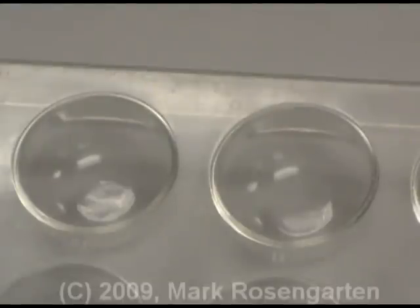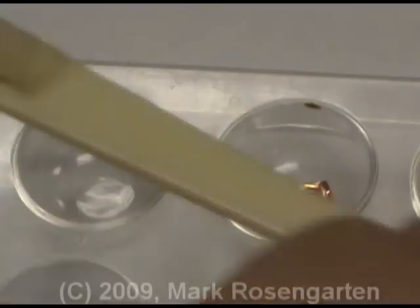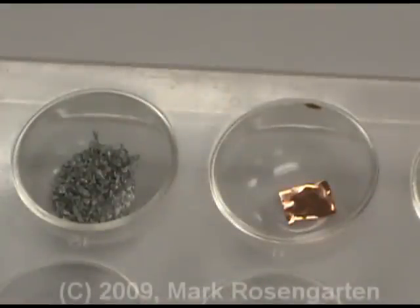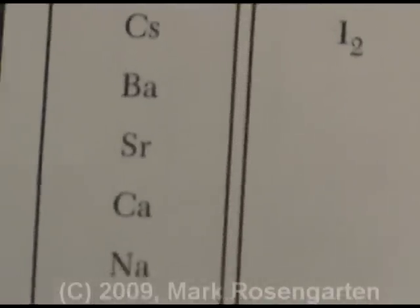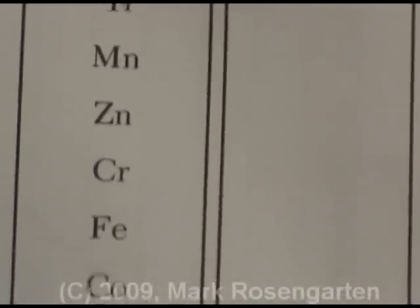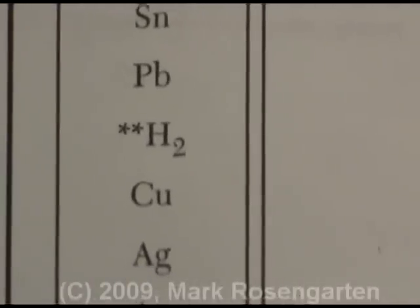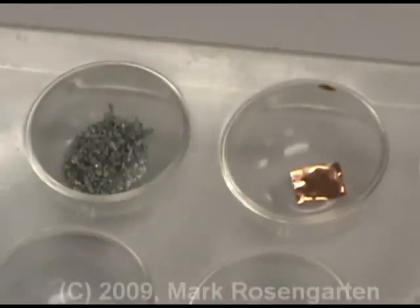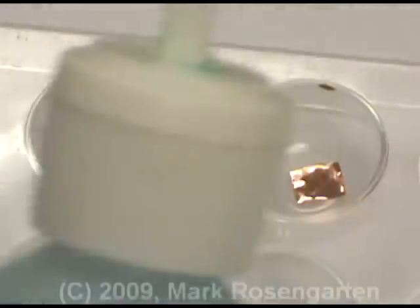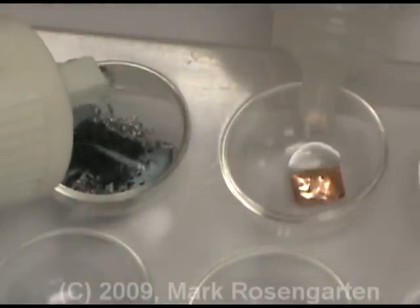This next reaction will test the relative reactivities of two metals: copper and zinc. According to reference table J, zinc is listed higher than copper, which means that zinc should be able to replace copper in a compound, but copper will not be able to replace zinc in a compound. Let's put that to the test — I'm going to put copper nitrate in with the zinc and zinc nitrate in with the copper to see which one has a reaction.